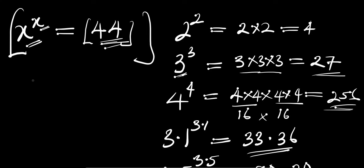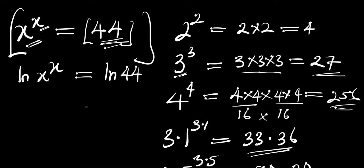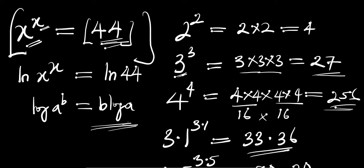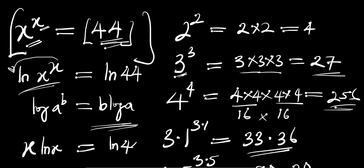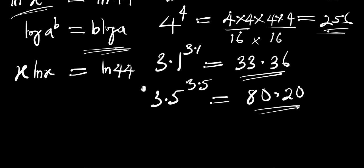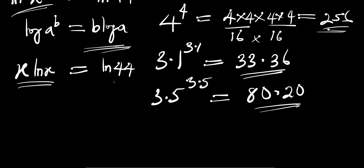We can start solving this problem by introducing the natural log. We take the natural log of x to the power of x, and this equals the natural log of 44. According to logarithm properties, log of a to the power of b equals b times log of a. Natural log is just logarithm with base e, so this same property holds here. So x comes out front: we get x times ln of x equals ln of 44.